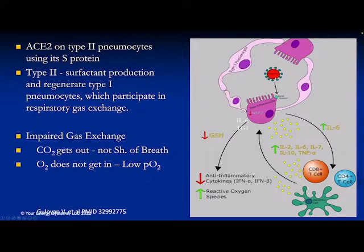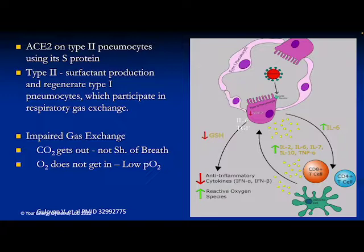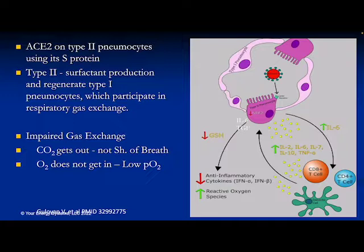Here we have the type 2 pneumocyte that has an ACE2 receptor and can receive the SARS-CoV-2 virus. It's important to understand that type 2 takes care of type 1, and type 1 is where gas exchange occurs — where CO2 gets out and oxygen gets back into our body. Early in COVID, this was poorly understood because people would come in ill but speaking, then suddenly need oxygen support or intubation. The CO2 could get out, but the oxygen needed by the body could not get in, leaving an extremely low pressure of oxygen.